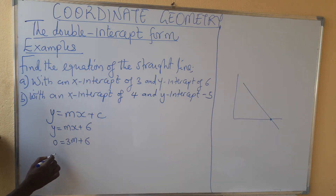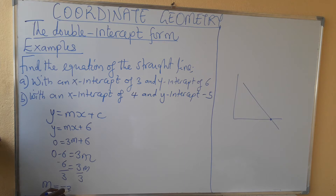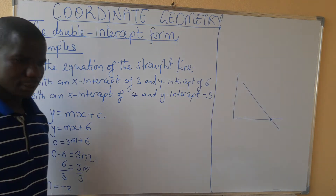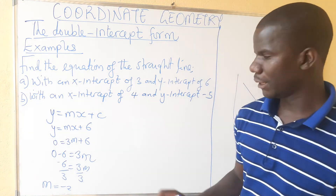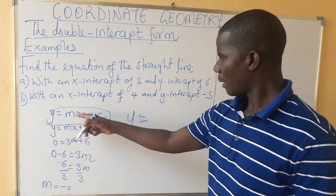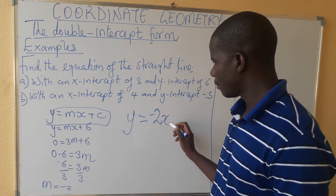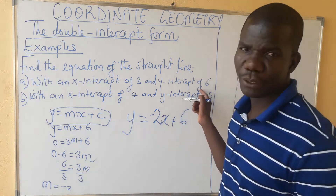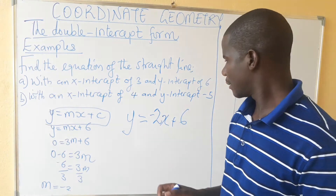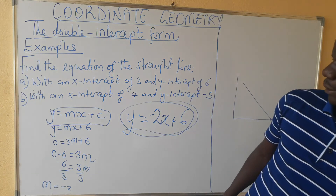So we get 0 minus 6 equals 3m, which gives minus 6 equals 3m. When you divide, m equals minus 2. So our equation is now y equals minus 2x plus 6. The 6 is the y-intercept — it's already given.